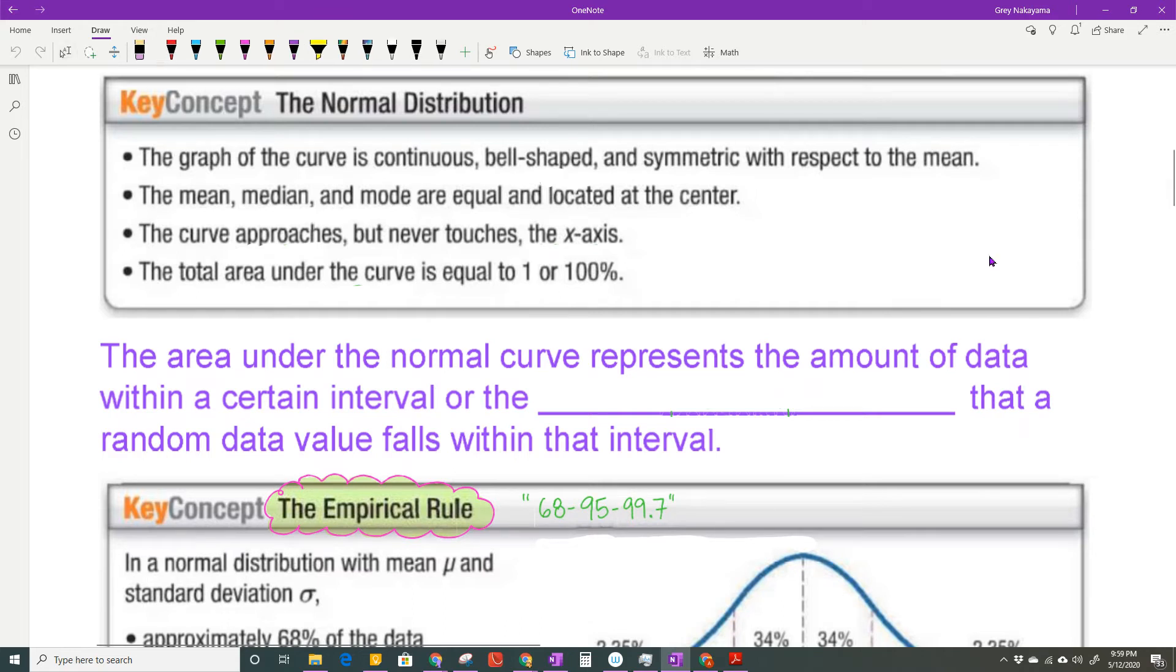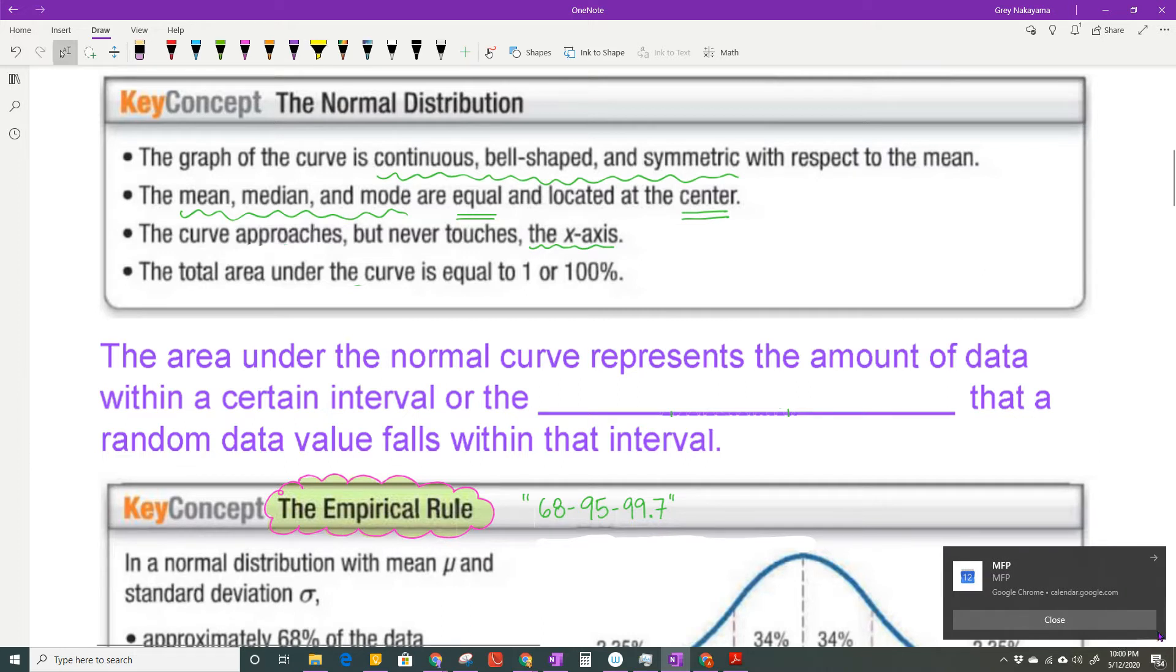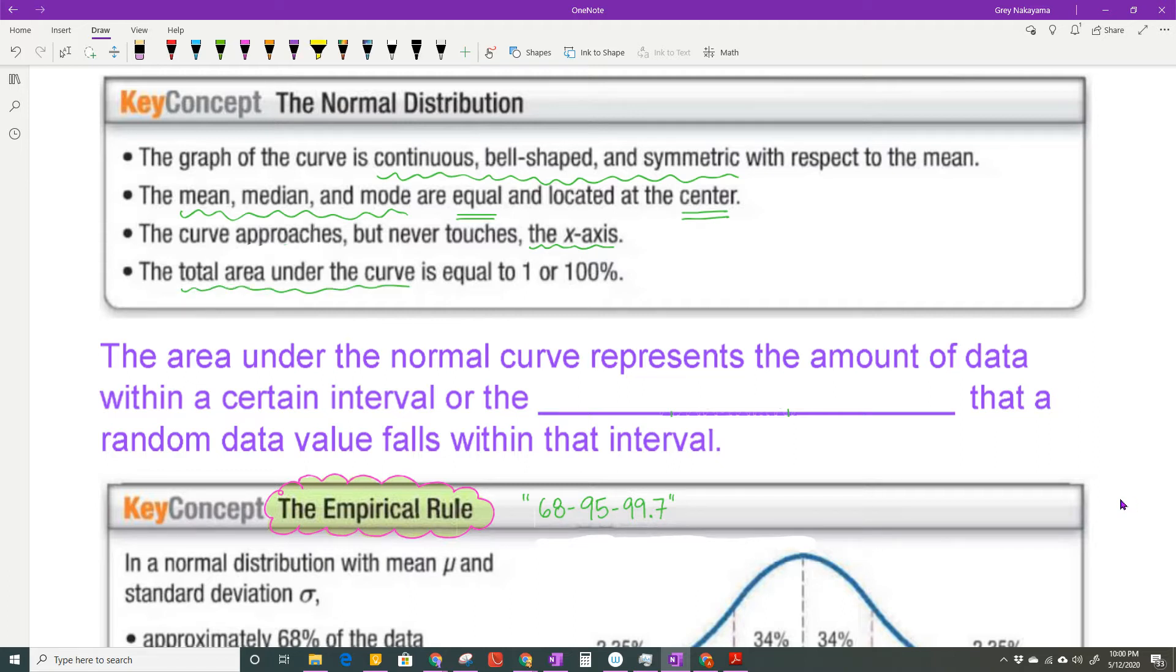As I just said, it's continuous, it's bell-shaped, it's symmetric with respect to the mean. The mean, median, and mode are all equal and located at the center of the graph. The curve approaches but never touches the x-axis. And the total area under the curve is equal to 1 or 100%. The area under the normal curve represents the amount of data within a certain interval or the probability that a random data value will fall within that interval.